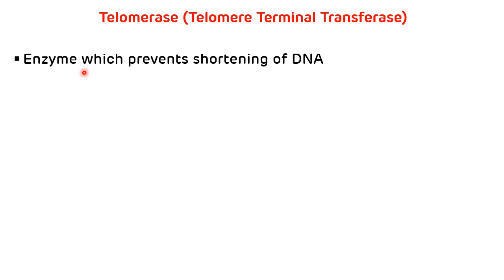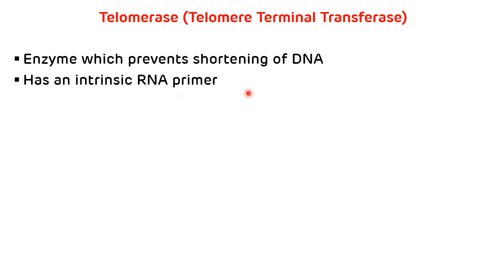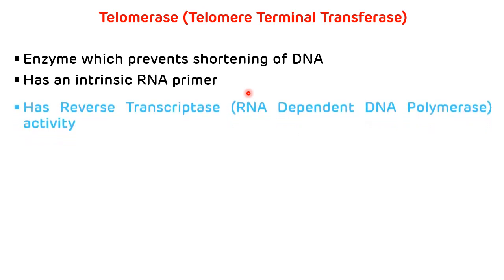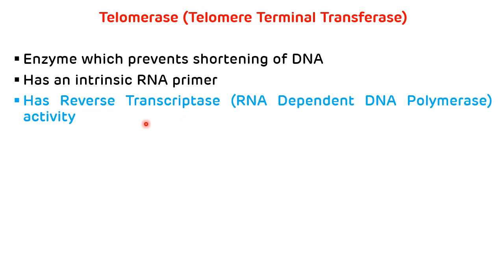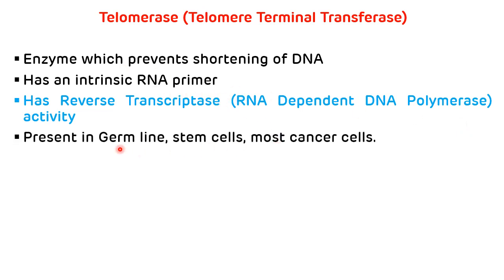Telomerase, also called telomere terminal transferase, is the specialized polymerase enzyme responsible for the synthesis of telomeres. It is the enzyme that prevents the shortening of DNA. It has an intrinsic RNA template responsible for DNA synthesis, and has reverse transcriptase activity — meaning it is called an RNA-dependent DNA polymerase enzyme. It is present in the germline, stem cells, and most cancer cells, but it is absent in somatic cells.